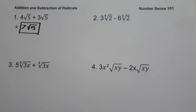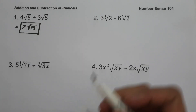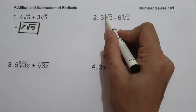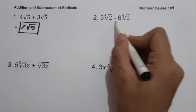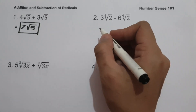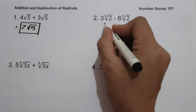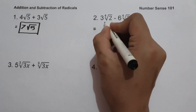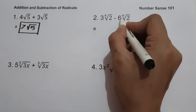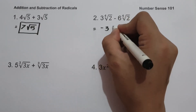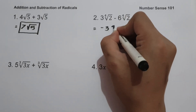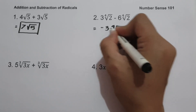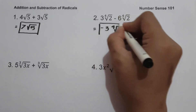On example number two we have three to the fourth root of two minus six to the fourth root of two. Since we have the same index, which is four, and same radicand, which is two, all we have to do is subtract their coefficients: three minus six gives us negative three, and let us rewrite fourth root of two. This will be our answer.